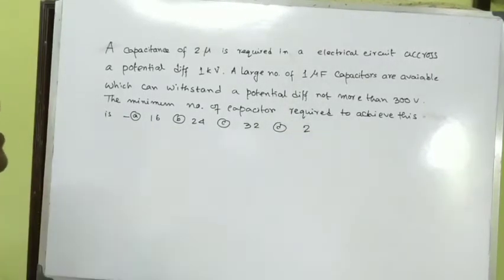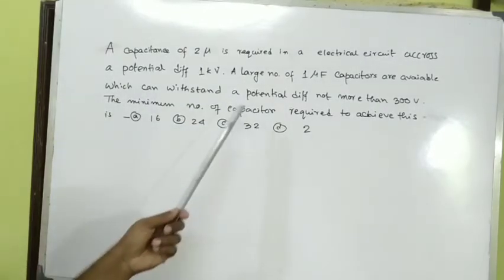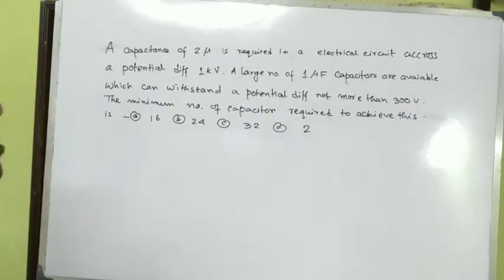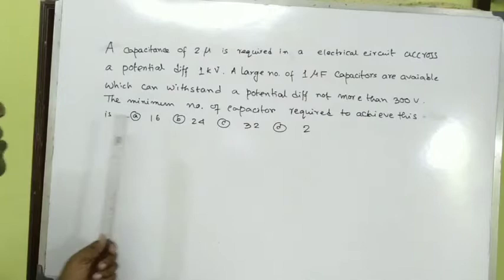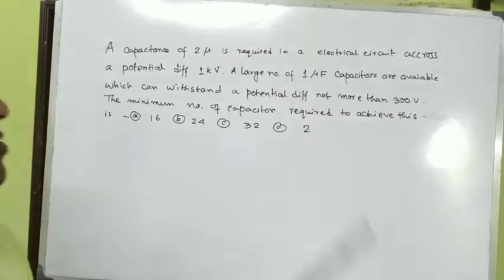A large number of one microfarad capacitors are available which can withstand a potential difference not more than 300 volts. The minimum number of capacitors required to achieve this is: option A - 16, option B - 24, option C - 32, option D - 2.